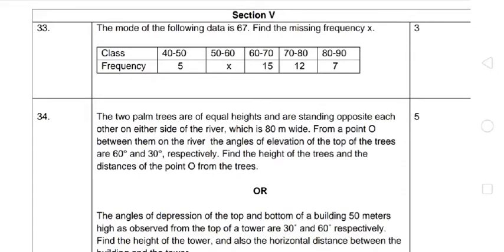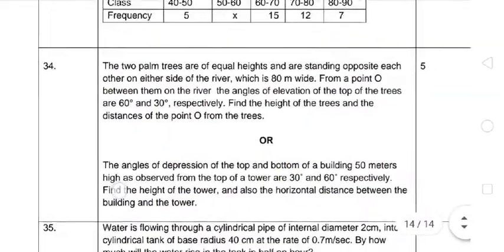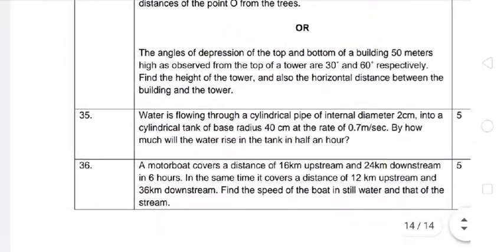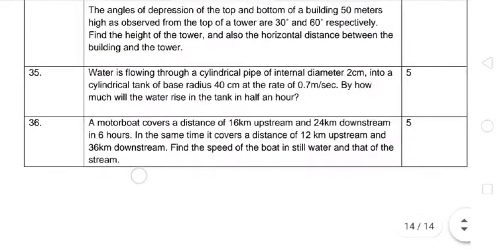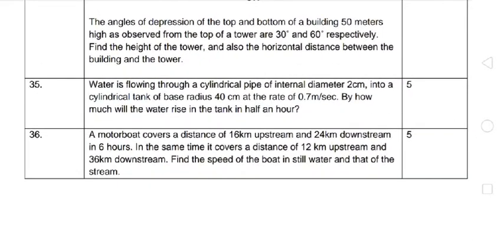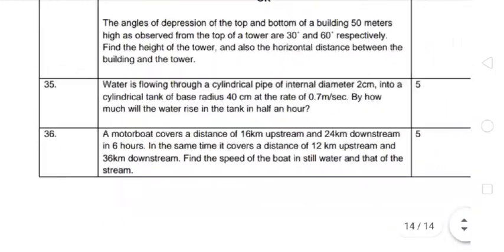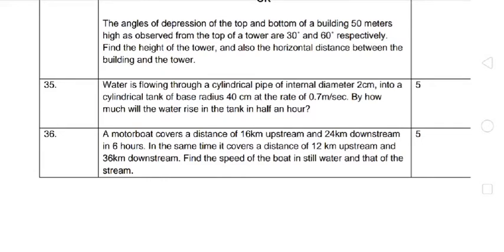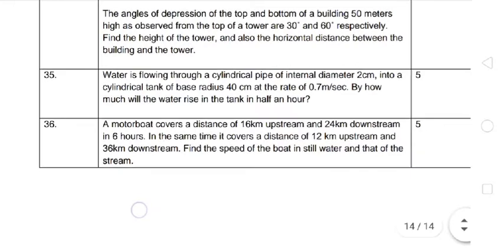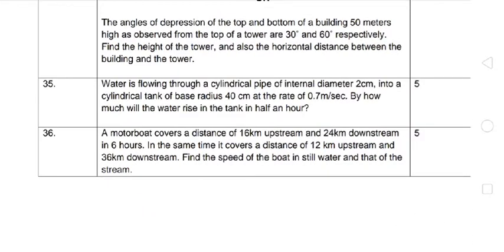Hello students, welcome back to my YouTube channel Supreme Learning Academy. Section 5 — Math, questions 33, 34, and 35 are done. Now we come to the last question of the CBSC Board 2021 official paper. Question number 36: A motorboat covers a distance of 16 km upstream and 24 km downstream in 6 hours. In the same time it covers 12 km upstream and 36 km downstream. Find the speed of the boat in still water and the speed of the stream.